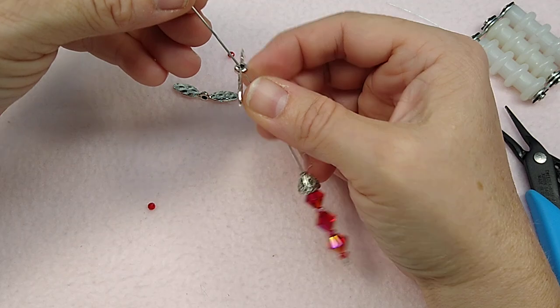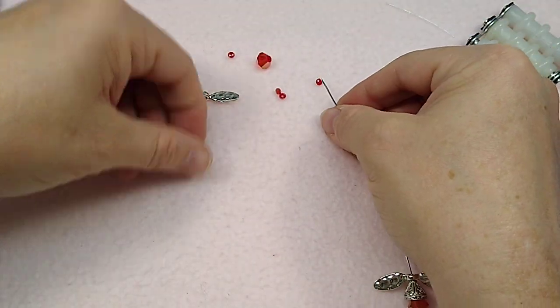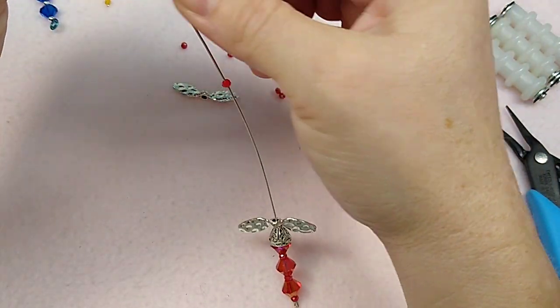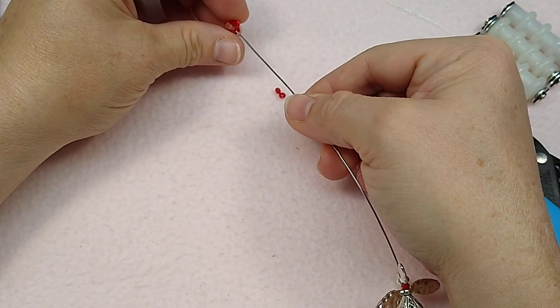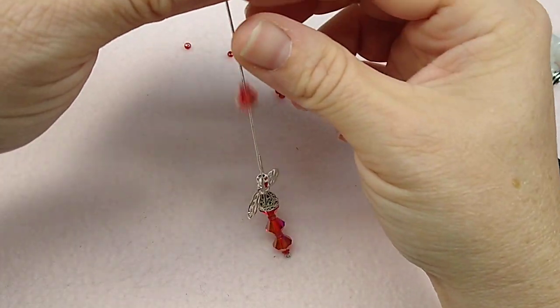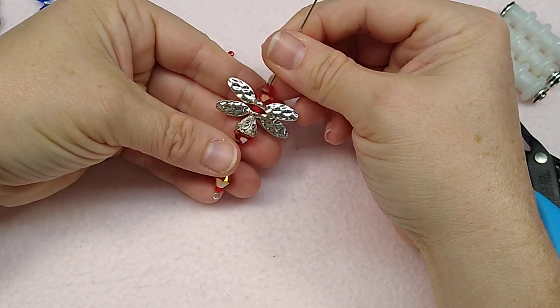And then I'm going to do my wing facing down. Another rondelle. A wing facing up. And its head. Okay. And that's this one.